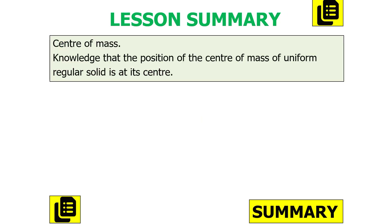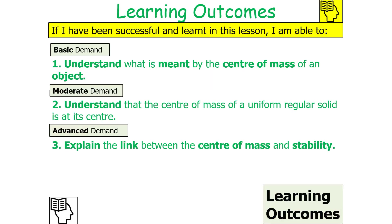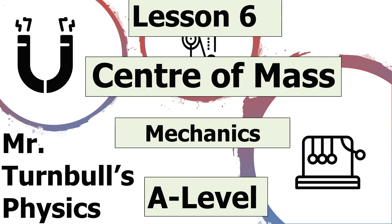To summarise today's lesson: we understand what the centre of mass and centre of gravity are, and that the position of the centre of mass of a uniform regular solid is at its centre. We can understand what is meant by the term centre of mass, understand that a uniform regular solid has its centre of mass at its centre, and explain the link between the centre of mass and stability. Thank you very much for watching this lesson on the centre of mass, part of the mechanics topic in AQA A-level physics. Have a lovely day.